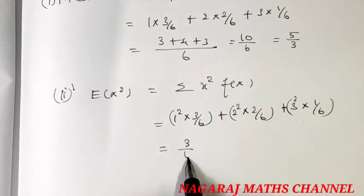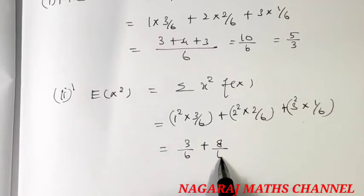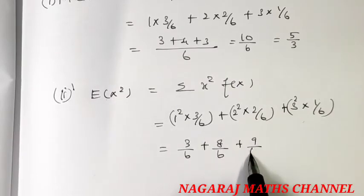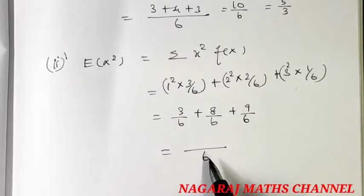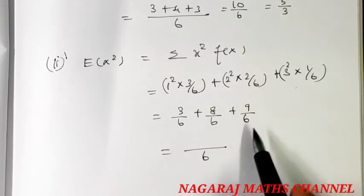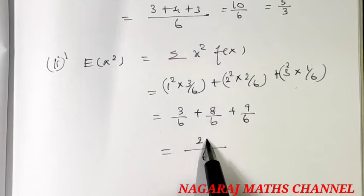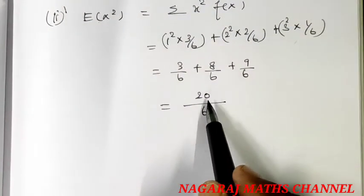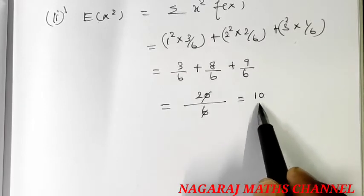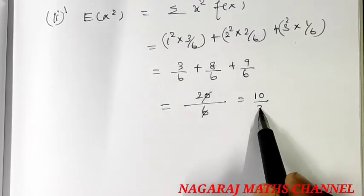So, this is 3 by 6, this is 8 by 6, this is 9 divided by 6. The denominator is 6, you will add 20 divided by 6. You will cancel this, you will also add 10 divided by 3.